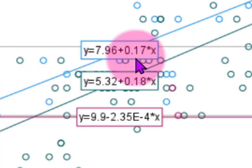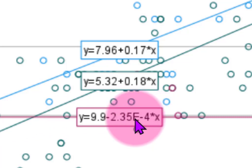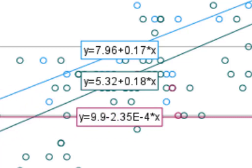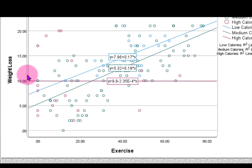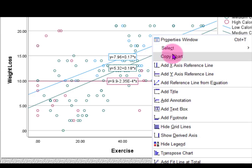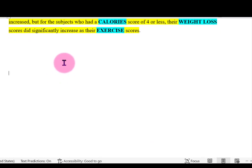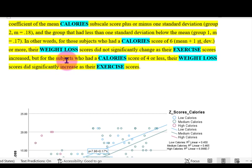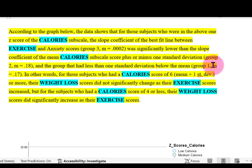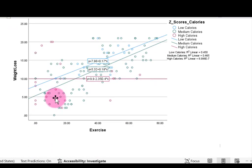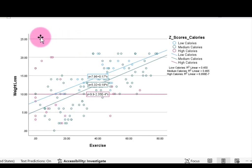Looking at the slopes — the coefficient in front of X — the blue line has a slope of 0.17, which is fairly strong. The green line is slightly higher at 0.18. For the red line, the value is written in scientific notation as negative four, meaning 0.0002, which is essentially zero — no relationship. When exercise changes, weight loss stays flat. You would include those slope values in the write-up. The amount of calories does in fact moderate the effect between exercise and weight loss.